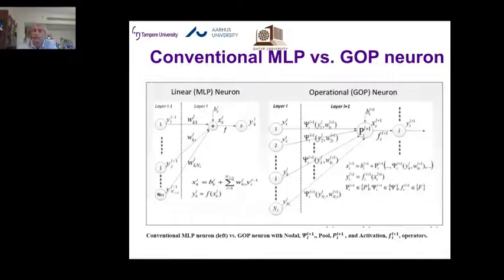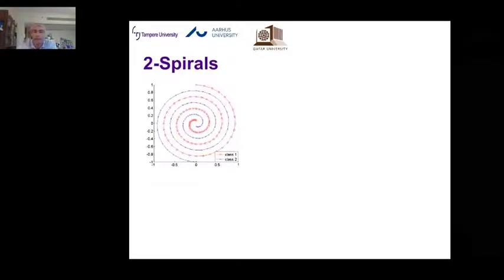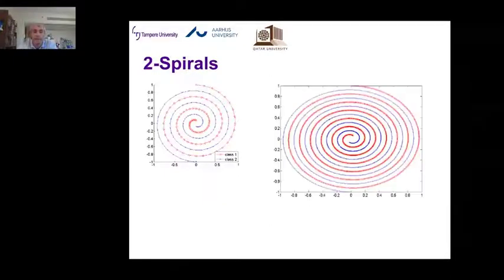For example, training an MLP on a two-spiral problem with two or three hidden layers and around 100 neurons will yield zero accuracy. We even extended this problem 30 times to make it more complex, and the MLP still gives zero accuracy, whereas a GOP can learn it 100 percent.